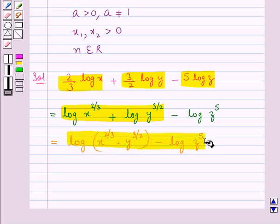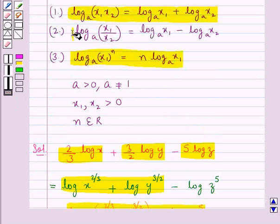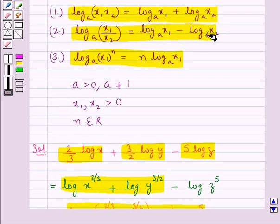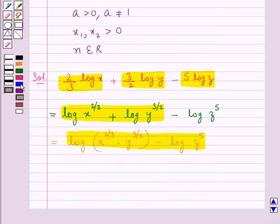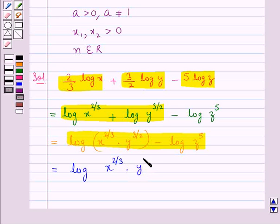Now we have the difference of two logs, so we use the second law: log x1 to the base a minus log x2 to the base a. Using this, we get log of x to the power 2 upon 3 into y to the power 3 upon 2, upon z to the power 5.